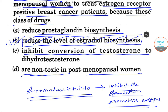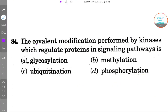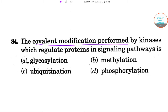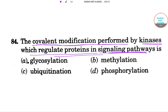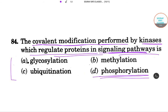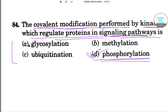Moving to the next question, about the covalent modification performed by kinases which regulate proteins in signaling pathways. The answer is phosphorylation — that is the correct answer. Let me explain why phosphorylation is correct.